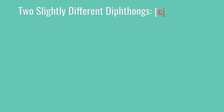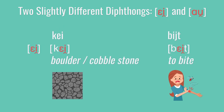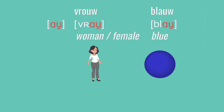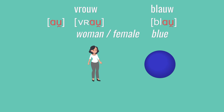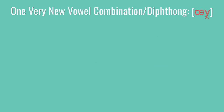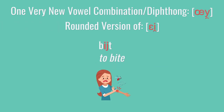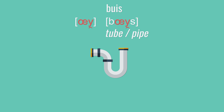Then there were two diphthongs that were slightly different from familiar English diphthongs. EI as in kei and bijt — this one starts out at E and ends at I. And AU as in vrouw or blauw — this one starts out at A and ends at U. Then we went over a rounded diphthong — a rounded version of EI as in bijt. This one is AU as in buis, a combination of E — a rounded E vowel — and U.